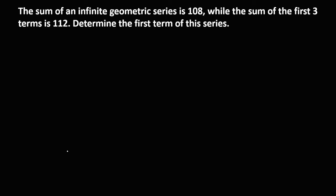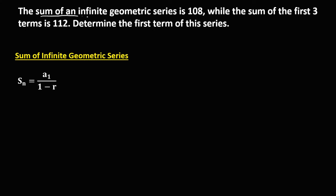Since this is the formula to find the sum of the infinite geometric series, and in the problem the given sum of the infinite geometric series is 108, so therefore this becomes 108, which equals a sub 1 — that's the first term — over 1 minus r, where r is the common ratio.